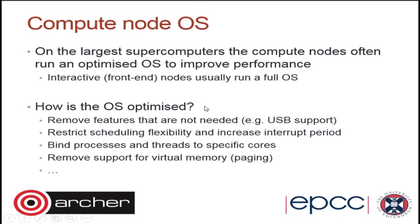The other thing removed on HPC systems is virtual memory. Most computers let you run programs using more RAM than you physically have by swapping data out to disk. This is convenient, but swapping to disk is very slow — remember that hard disks are much slower than memory. So on high performance computers, virtual memory is turned off.